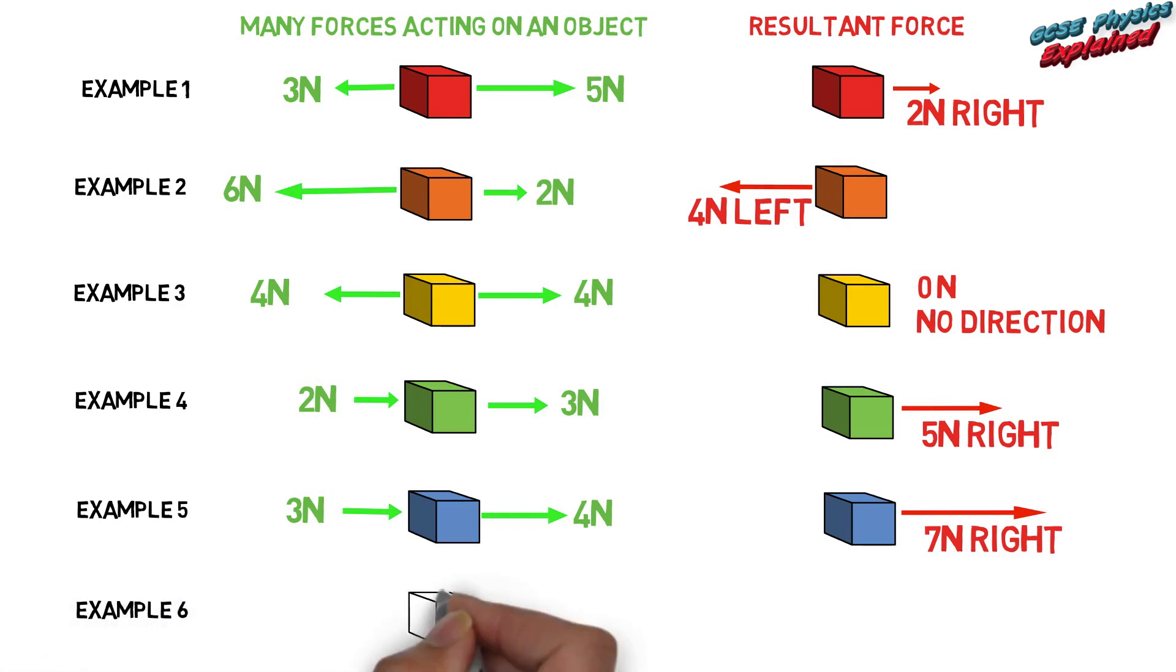Example six: Two newtons left, one newton left. Resultant force: three newtons to the left.